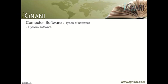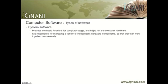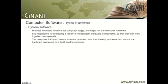System software provides the basic functions for computer usage and helps run the computer hardware. System software is any software designed to operate the computer hardware and to maintain a platform for running application software. It is responsible for managing a variety of independent hardware components so that they can work together harmoniously. The most basic types of system software are the computer BIOS and device firmware, which provide basic functionality to operate and control the hardware connected to or built into the computer.